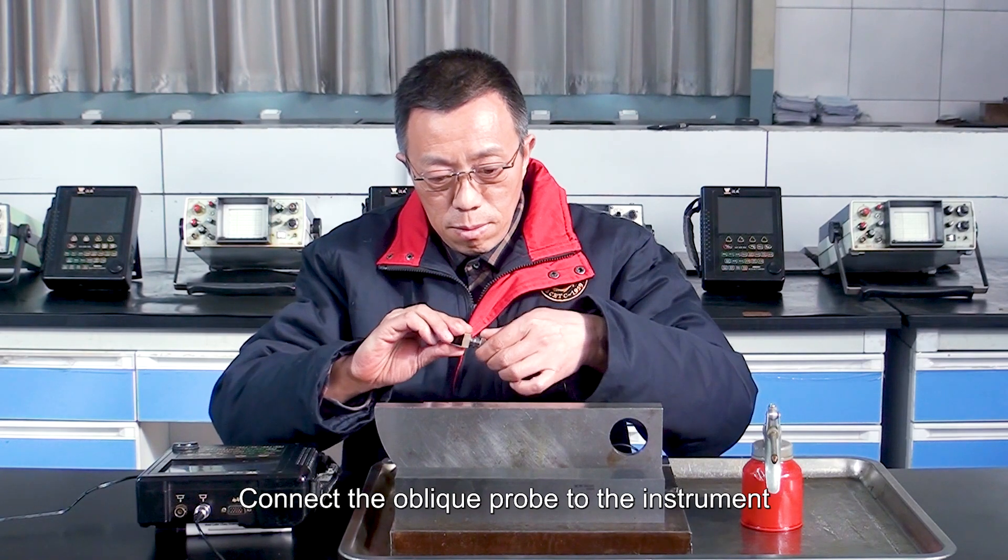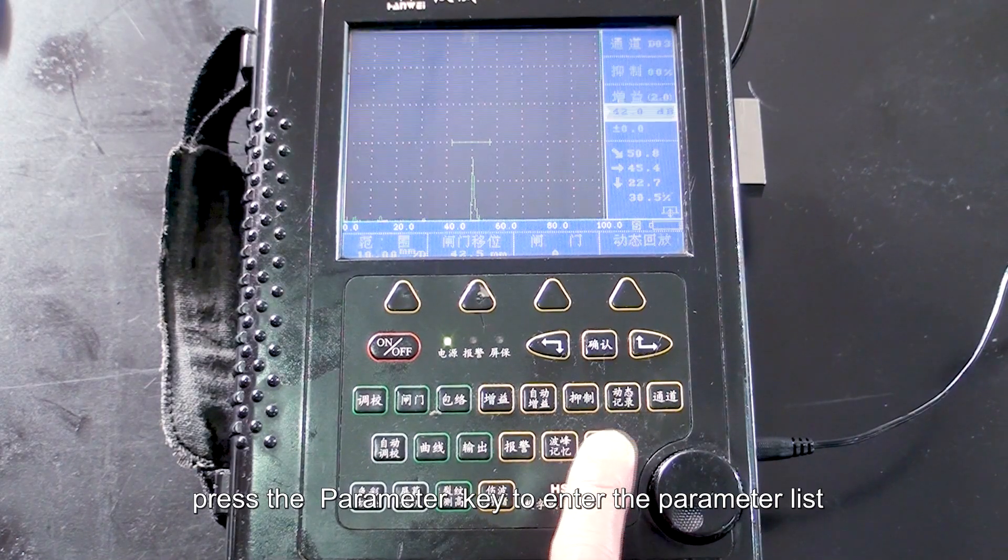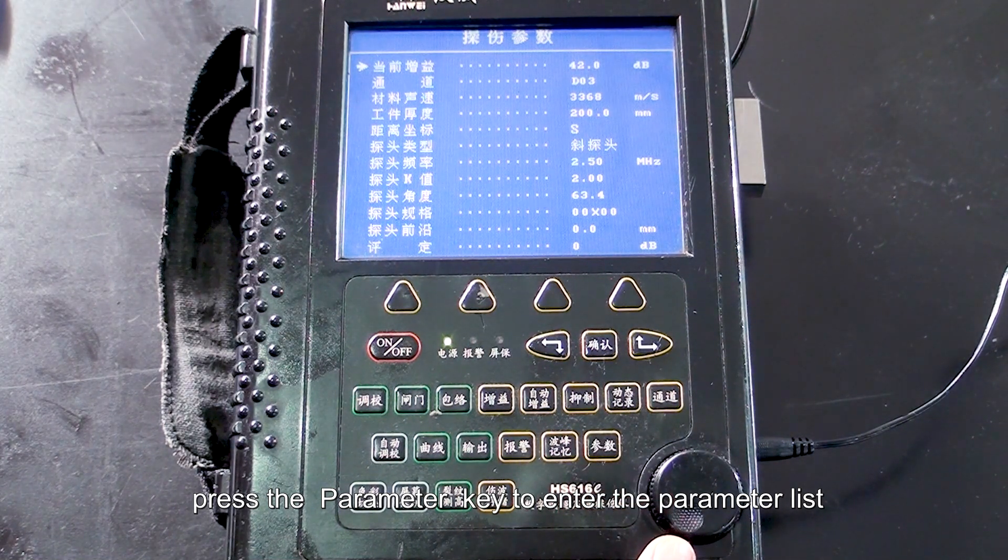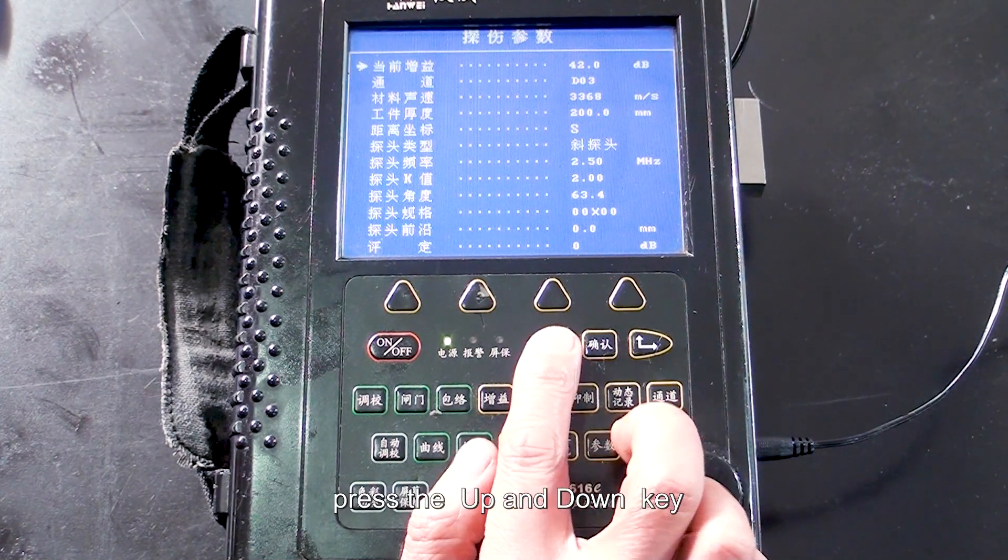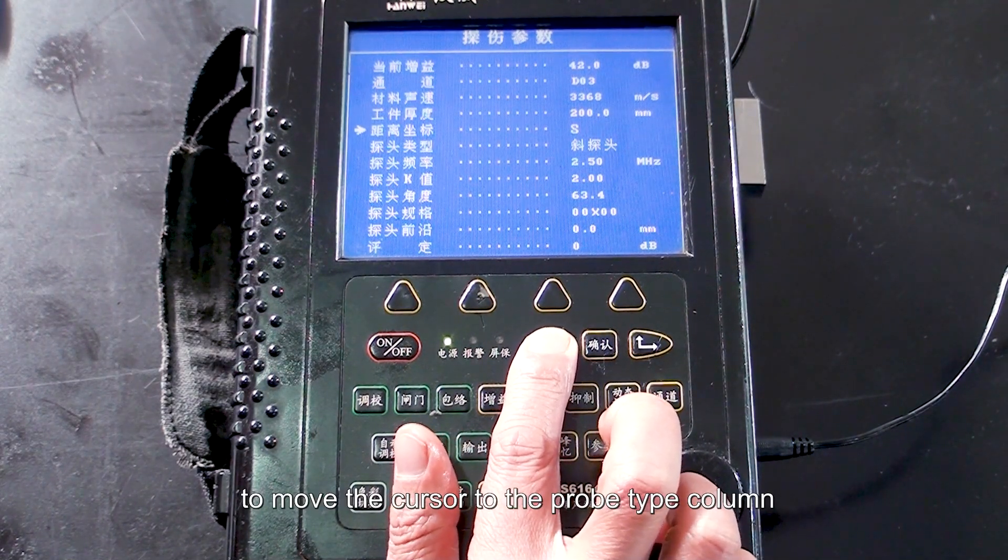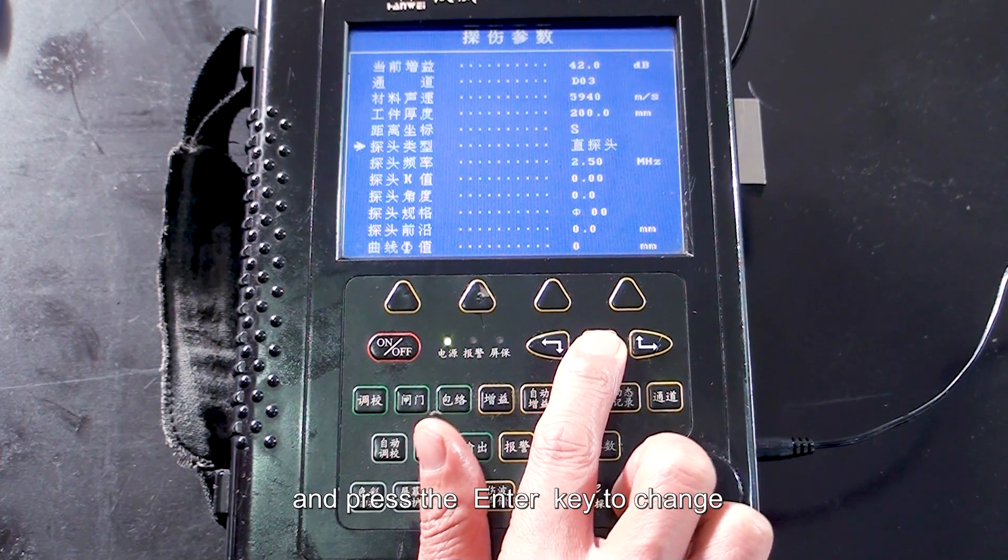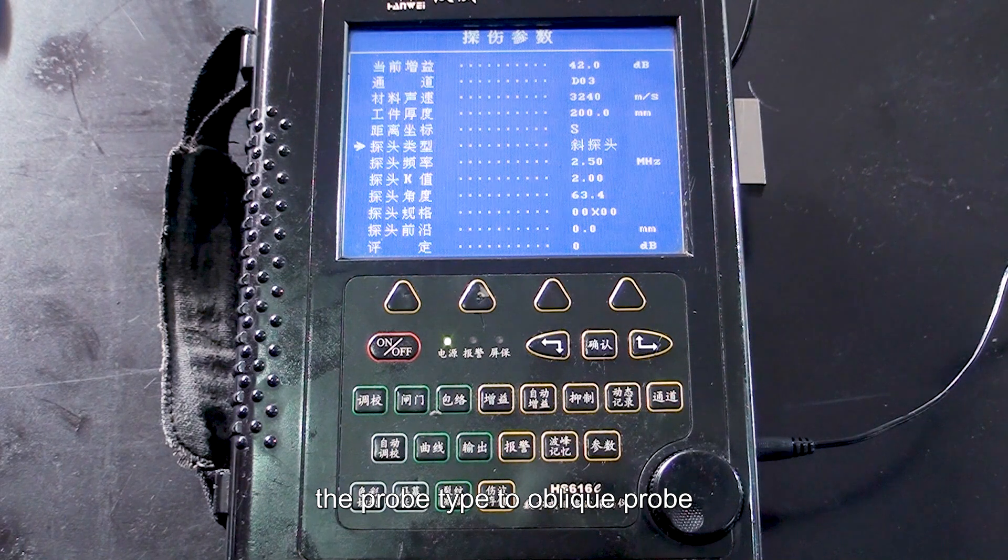Connect the oblique probe to the instrument, press the parameter key to enter the parameter list, press the parameter key to move the cursor to the probe type column, and press the enter key to change the probe type to oblique probe.